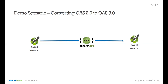The first thing I want to talk about is the situation where you have an OAS 2 specification and how you can convert it to OAS 3. This is easily done with a couple of clicks within our SwaggerHub platform.